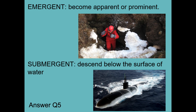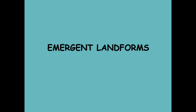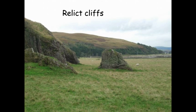You've probably heard about people emerging from caves, or emerging from the house on a bright summer's day — where it's something that becomes apparent that you couldn't see before. And submergent — just think submarine, nice and easy. So we're going to start off with emergent. These are landforms that used to be at or below sea level and are now very definitely above sea level.